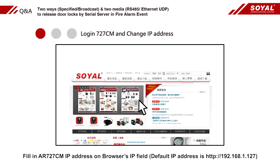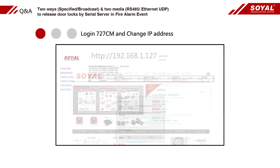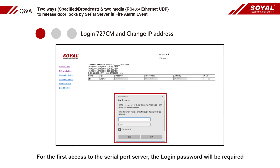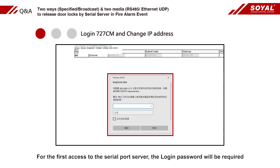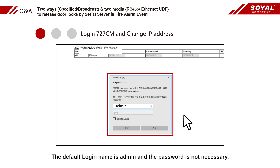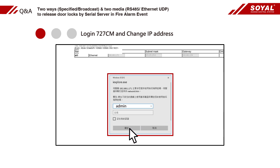Fill in the AR727CN IP address in the browser's IP field. For access to the serial port server, the login password will be required. The default login name is admin and the password is not necessary. Click Yes to enter the setting page.